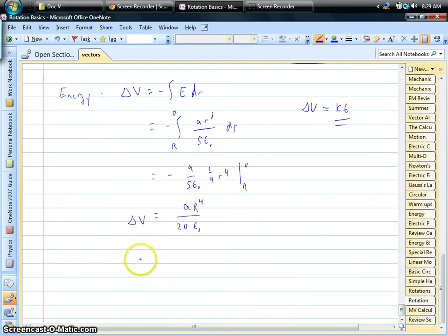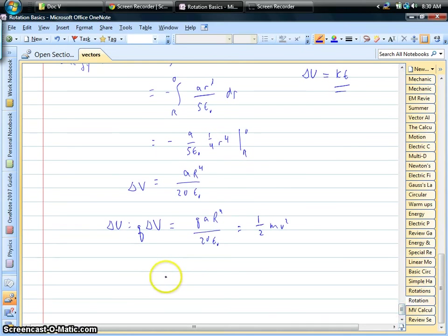Okay, so energy tells us that our change in potential energy is the charge of the electron times delta V. So that's going to be the charge times the constant A R to the fourth power over 20 epsilon. We want that loss in potential energy to be our gain in the kinetic energy of the electron. So we can go ahead and figure out what the speed is. We have a factor of two times charge a R to the fourth all over 20 epsilon times the mass of the electron and then we have to square root that. It's a funny-looking answer, but that's not the point.